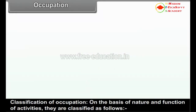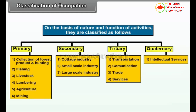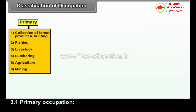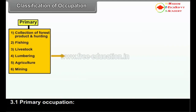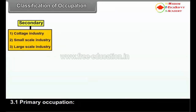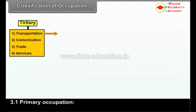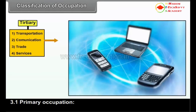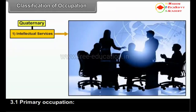Classification of occupation: On the basis of nature and function of activities, they are classified as follows — Primary: 1. Collection of forest products and hunting, 2. Fishing, 3. Livestock, 4. Lumbering, 5. Agriculture, 6. Mining. Secondary: 1. Cottage industry, 2. Small-scale industry, 3. Large-scale industry. Tertiary: 1. Transportation, 2. Communication, 3. Trade, 4. Services. Quaternary: Intellectual services.